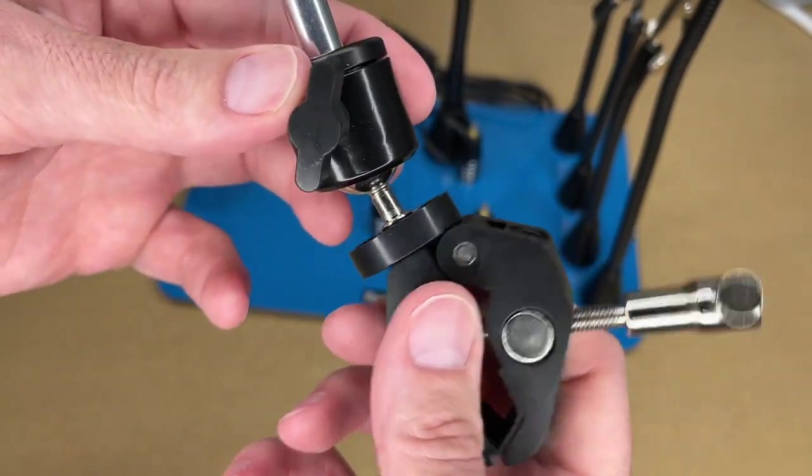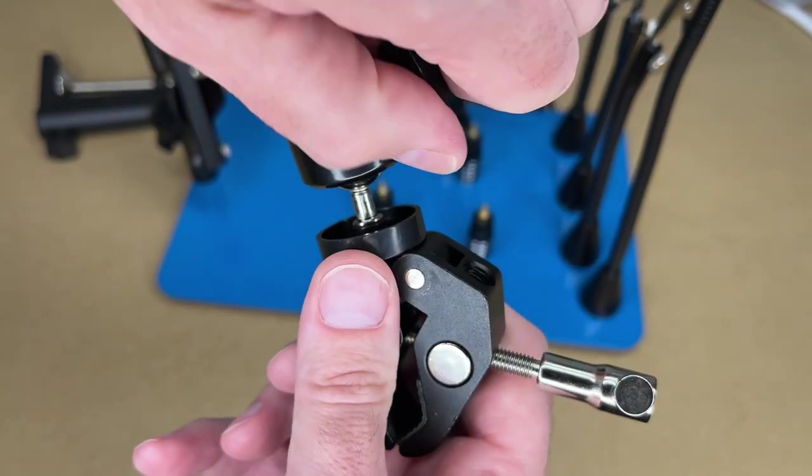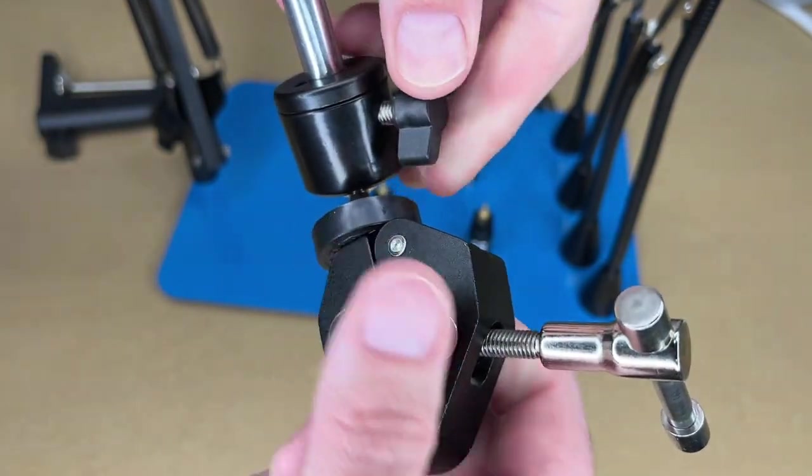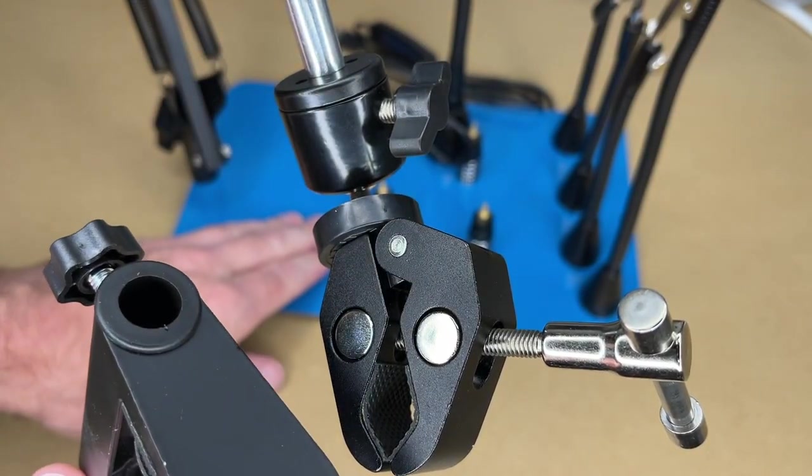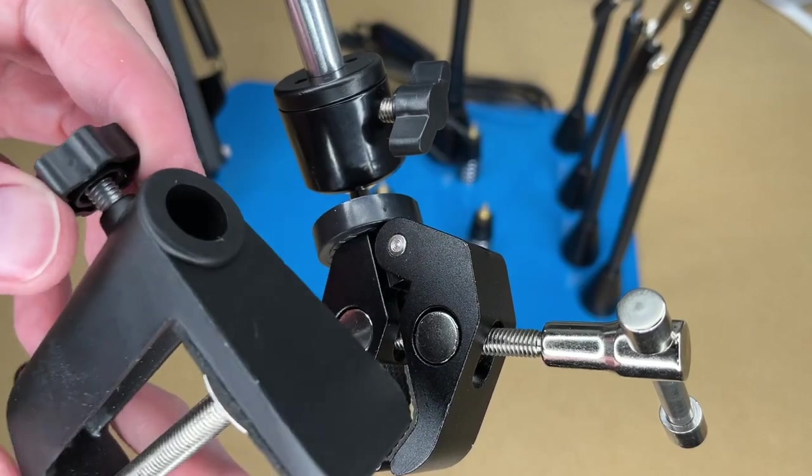It looks like this rotates here too. We can also tilt this. And this also has a clamp here, so you can clamp this to a bench. So when you're not using it with your soldering station, you can clamp this and use it elsewhere.